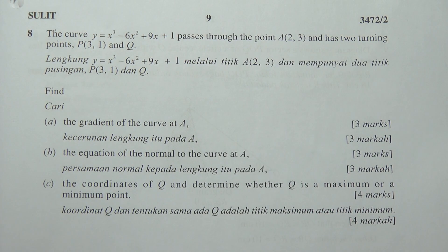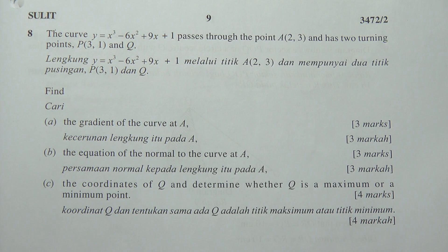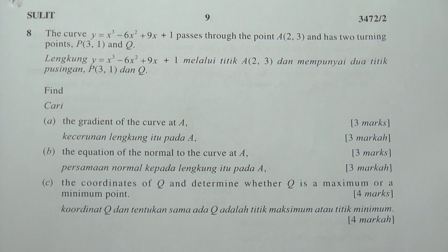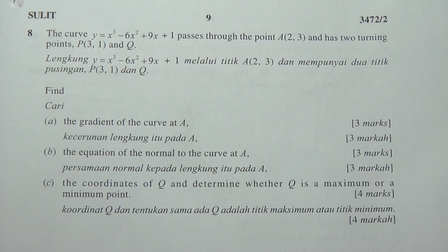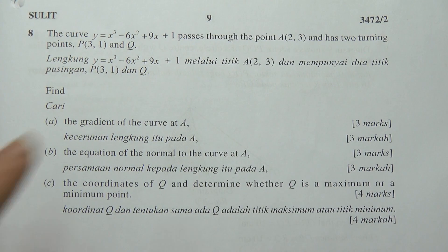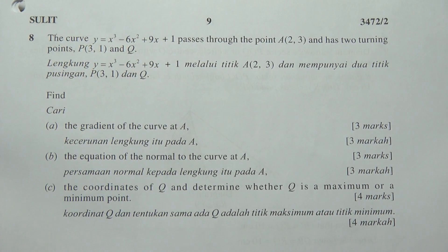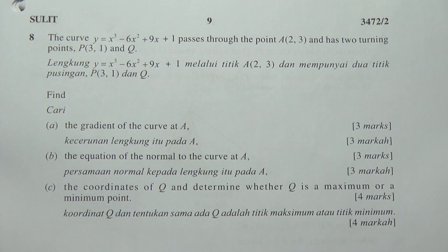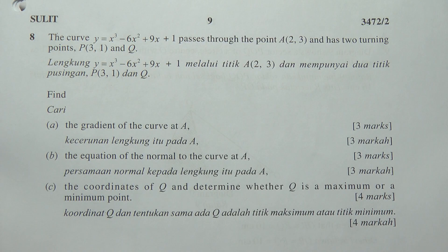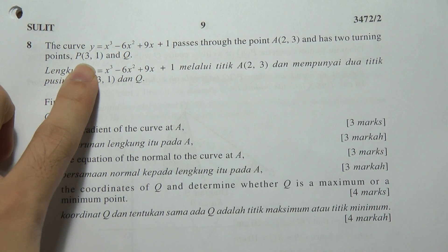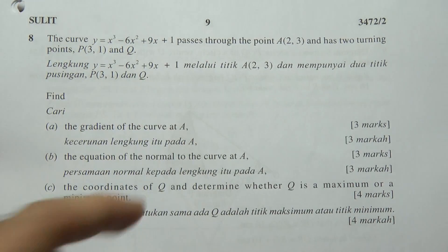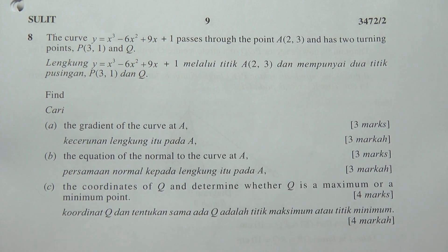Let's have a look at this question. This is the SBMX paper, paper two, question number eight — the differentiation chapter. The curve y = x³ - 6x² + 9x + 1 passes through point A(2,3) and has two turning points, P and Q.